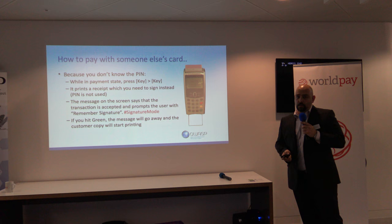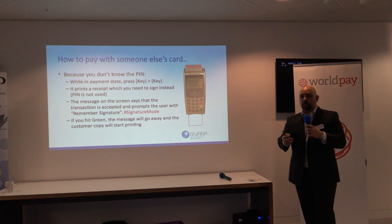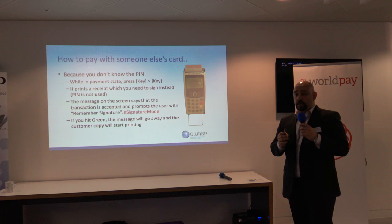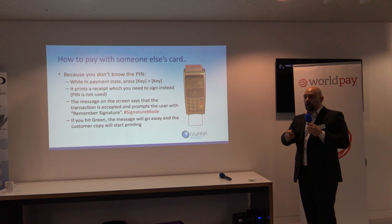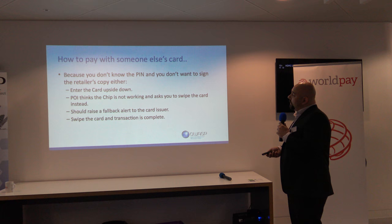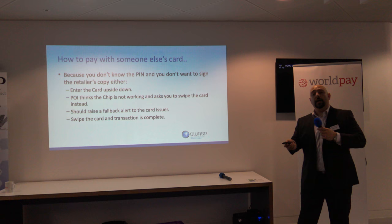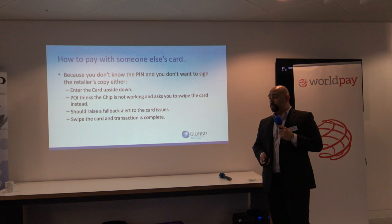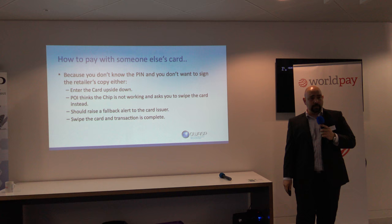Imagine someone who understands how the system works and wants to take advantage of it by forcing the device to switch into signature mode. While someone presents you the device so you can enter your card, you can follow a few steps to force the device into signature mode and pay with a card by signing it. Which means, if you found someone's card, you'll pay with it — and the only thing you need to do is scribble whatever is behind the card. Another trick is to enter the card upside down. The point of interaction thinks the chip is not working, asks you twice, then asks you to swipe as a fallback, completing the transaction without requiring a signature most of the time.